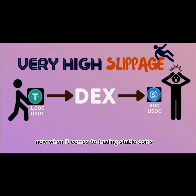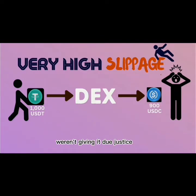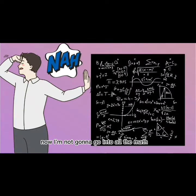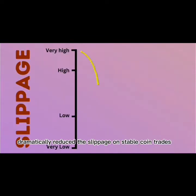When it comes to trading stablecoins, slippage is such a pain because the prices of the tokens are pegged, and the previous AMM algorithms weren't giving it due justice. So the hybrid constant function market maker was developed. This AMM dramatically reduced the slippage on stablecoin trades.